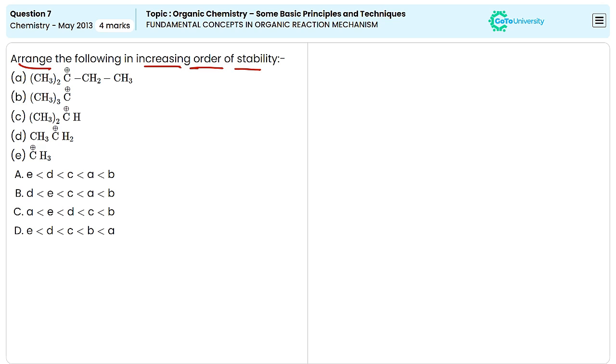Carbocations are electron deficient species and their stability can be explained on the basis of plus I effect or electron releasing effect. When an electron releasing group is attached to the carbocation, they can increase the electron density towards the carbon atom and stabilize the carbonium ion.